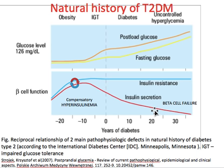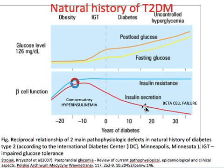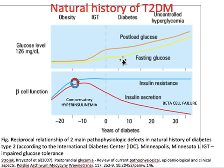As insulin secretion drops further, fasting blood glucose begins to rise. Once it reaches the threshold of FBS 126, the patient is diagnosed as diabetic. Insulin resistance persists, and over the years, with toxic hyperglycemia further loading the beta cells, they begin to fail. About 30 years from diagnosis, there will be very little beta cell function remaining. Without intervention, fasting glucose continues to rise.